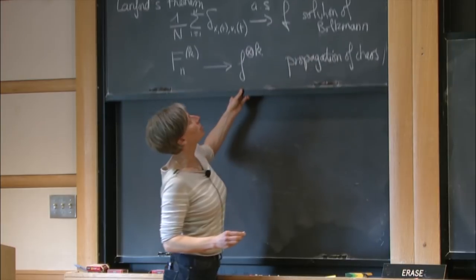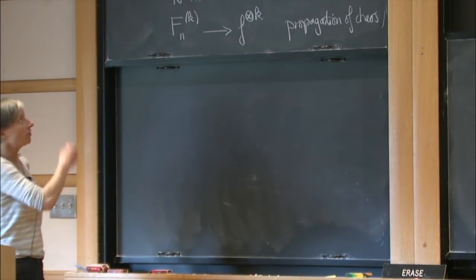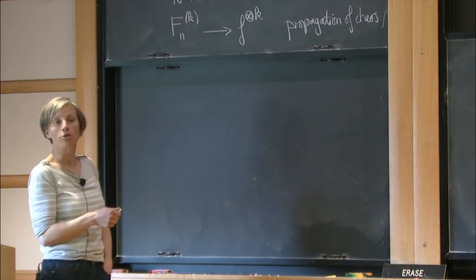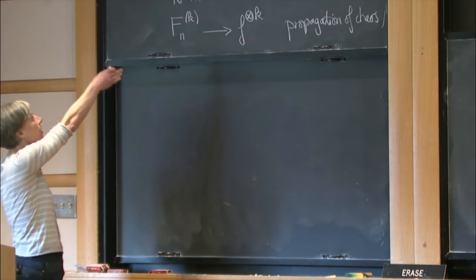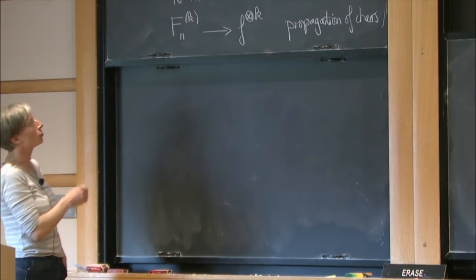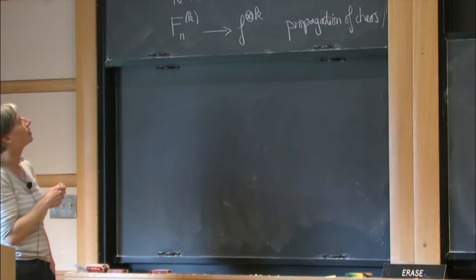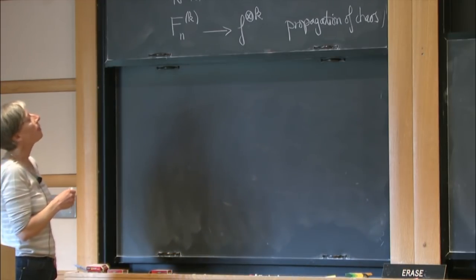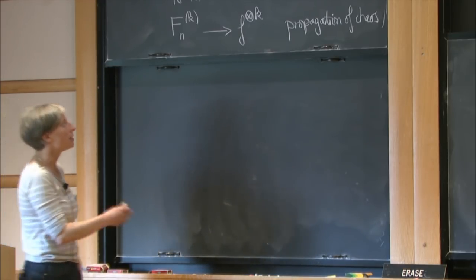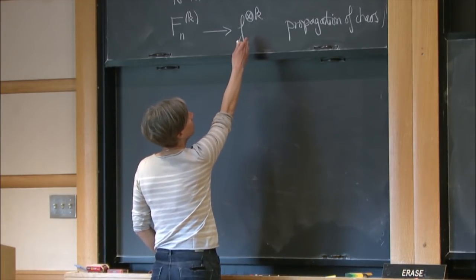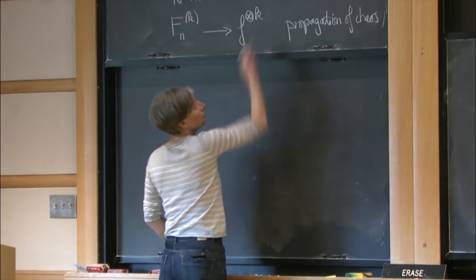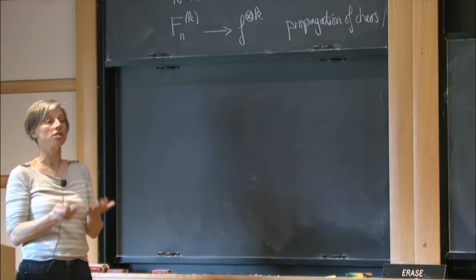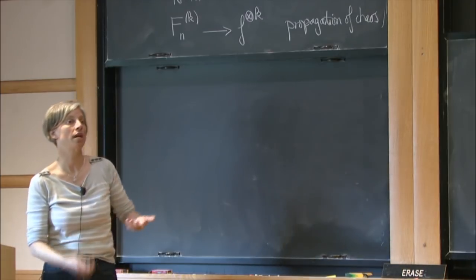This is essentially the law of large numbers for this system in the low density regime. This is only in the low density regime. Now, since f is the solution of the Boltzmann equation, we know that some information is missing — because if you look at the entropy of the system in this limit, the entropy will be decreasing, so the quantity of information is decreasing.